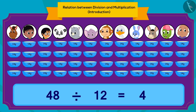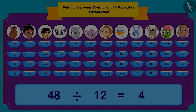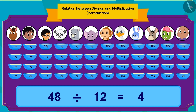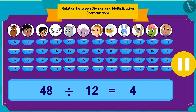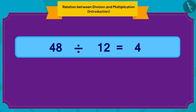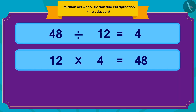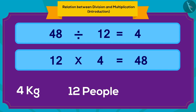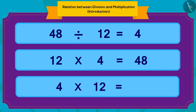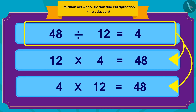We can write it like this using division. Children, can you write this division in the form of multiplication? You can pause the video and find the answer. Very good, children — you found the right answer! If there are 12 people and each person gets 4 kg of kheer, the total quantity is 48 kg: 12 multiplied by 4 is 48. We can also write this as 4 multiplied by 12, which is 48 kg. We can write any division in two ways in terms of multiplication.